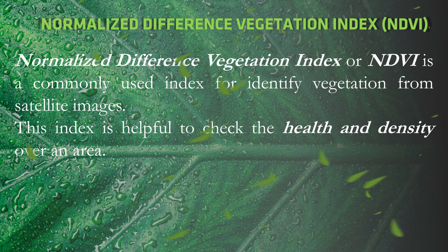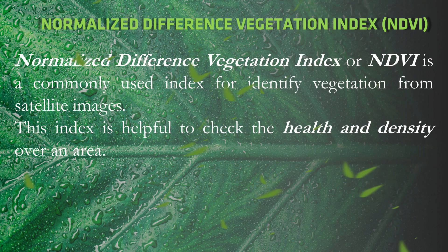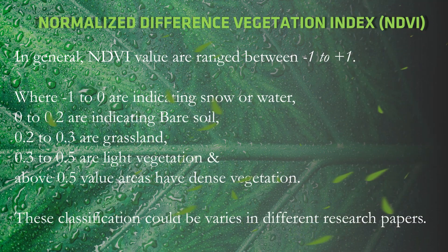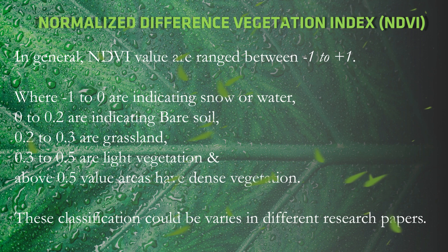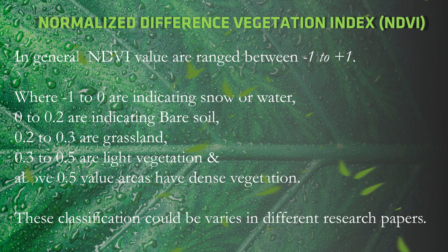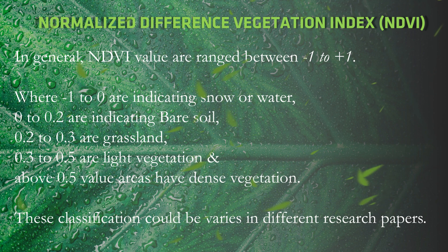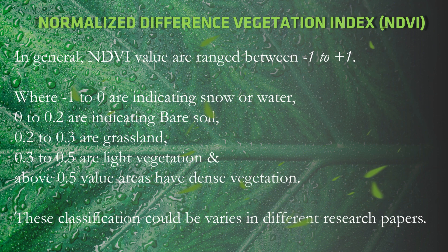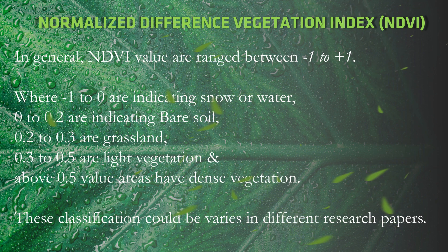Normalized Difference Vegetation Index, or NDVI, is a commonly used index for identifying vegetation from satellite images. In general, NDVI values range between –1 to +1, where –1 to 0 indicates snow or water, 0 to 0.2 indicates bare soil, 0.2 to 0.3 is grassland, 0.3 to 0.5 is light vegetation, and above 0.5 indicates dense vegetation.